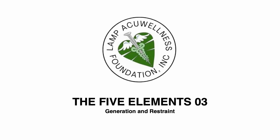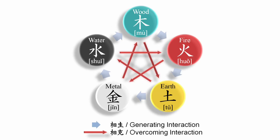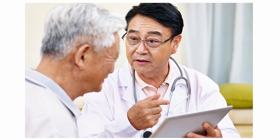Hello everyone, welcome to the LAMP Lecture Series featuring the Five Elements, Part Three, brought to you by LAMP Aqua Wellness Foundation Inc. Generation and restraint in TCM: the Five Elements or Five Phases theory outlines the relationship between different elements in nature and the life force or chi that flows through them. The basic elements are wood, fire, earth, metal, and water. Each individual is a blend of these elements, and in order to be truly healthy, they need to be balanced. Understanding how the five elements affect one's health can help the doctor develop a comprehensive and effective treatment plan to eliminate chronic conditions.